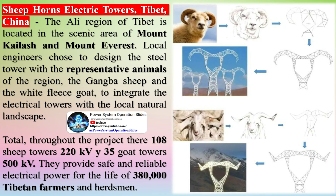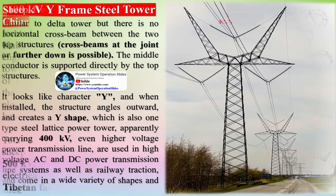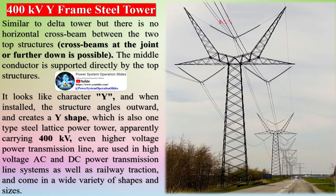The 400 kV Y-frame steel tower is similar to a delta tower but has no horizontal crossbeam between the two top structures. Crossbeams at the joint are placed as far down as possible, and the middle conductor is supported directly by the top structures.